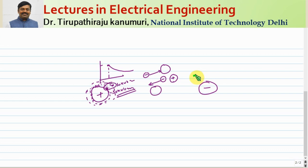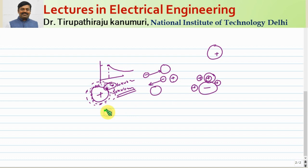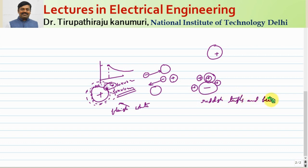For a negative conductor, only ions form at the surface. Since ions have greater weight, their mobility is lower compared to electrons. Because of this lower mobility, the color visible at the negative conductor is different. In DC conditions, a bluish-white color appears on the positive conductor, while on the negative conductor — due to lower carrier mobility — reddish tufts and beads are formed.